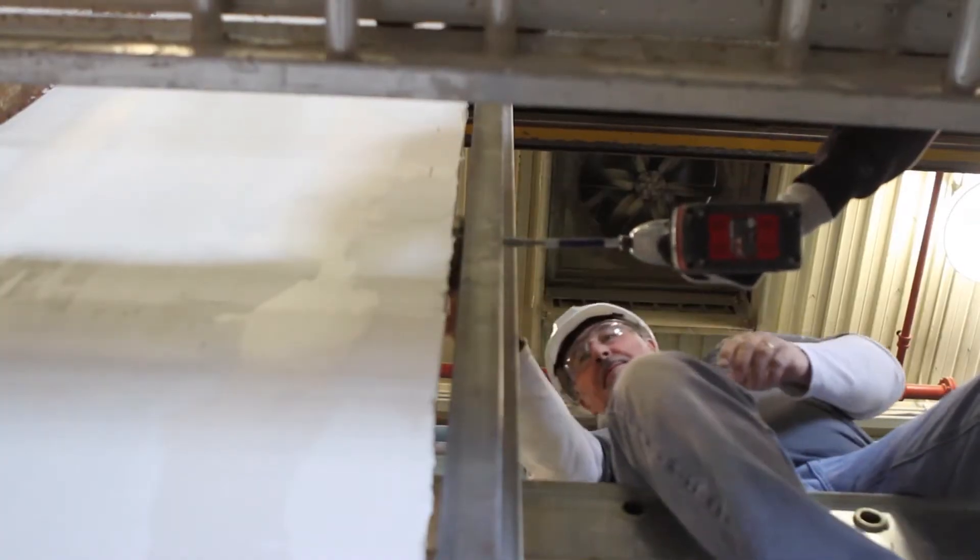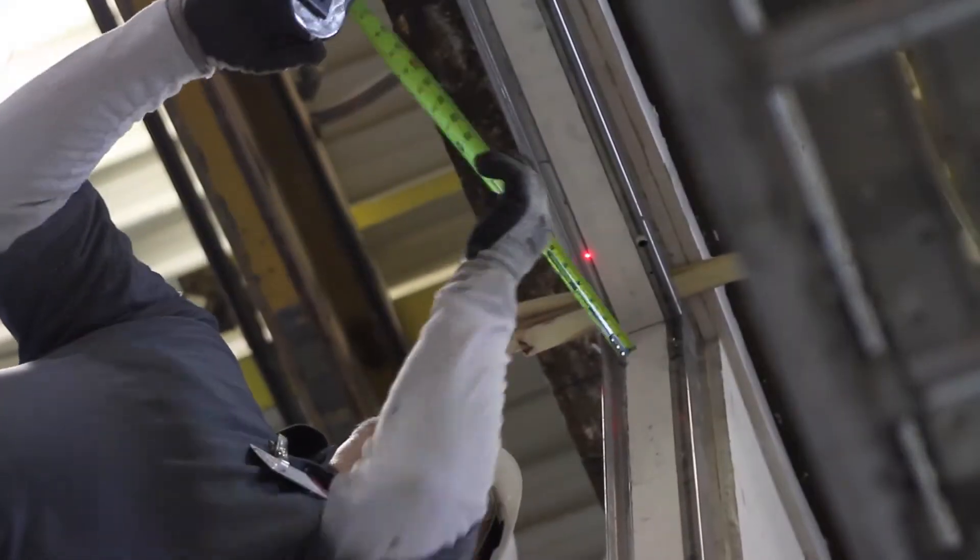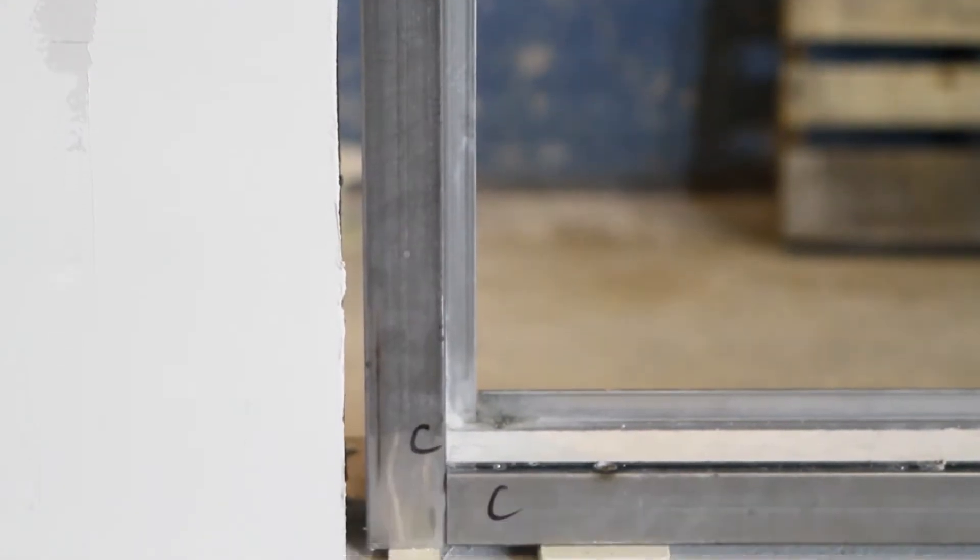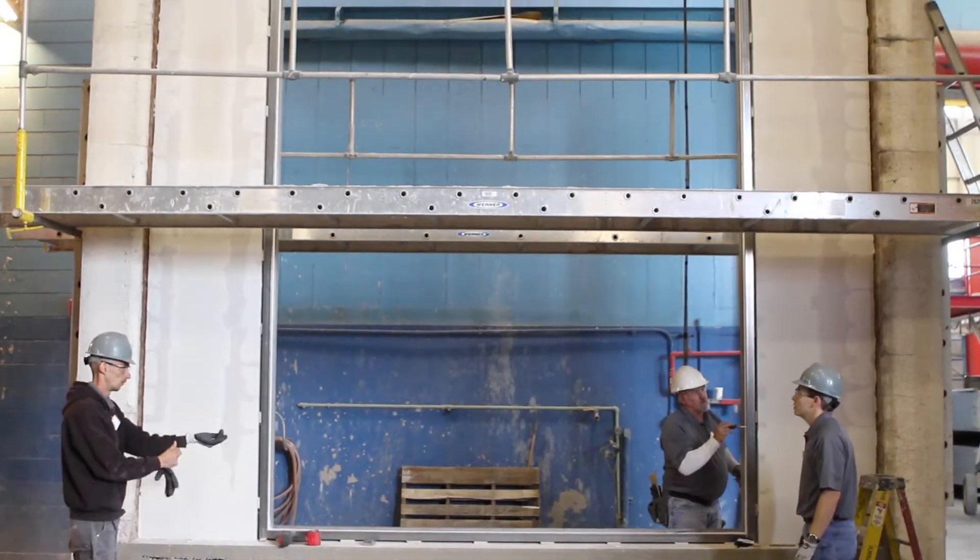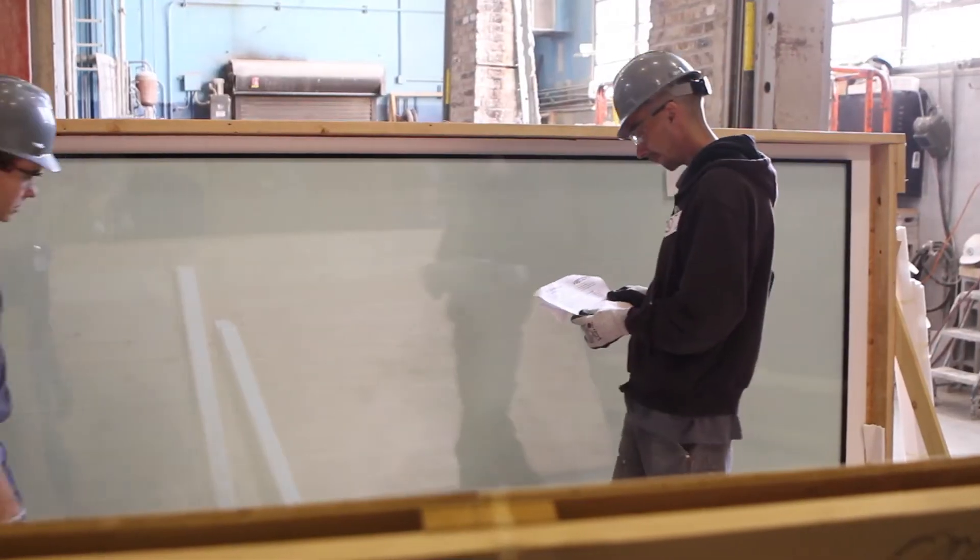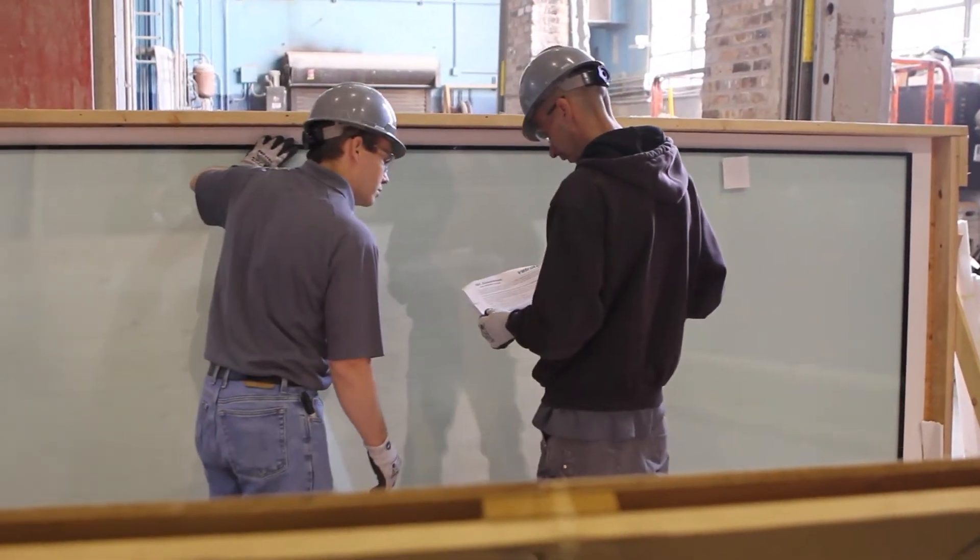Now continue with the side frames and the top, repeating the same process to ensure every part of the frame is straight. Your finished frame should be 100% square. Now you're ready to move on to preparing the glass itself.